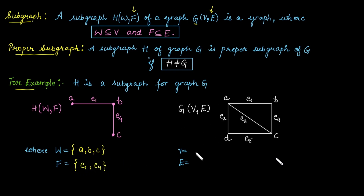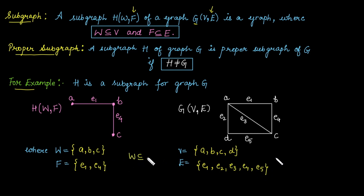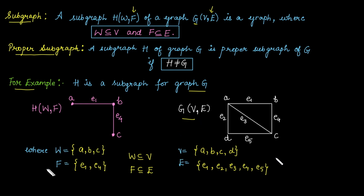G is a graph with vertex set {A, B, C, D} and edge set {E1, E2, E3, E4, E5}. We can check that W is a subset of vertex set V, and edge set F is a subset of edge set E. So H is a subgraph of G. Moreover, it is a proper subgraph because H is not equal to G — the vertex set W is not equal to V and edge set F is not equal to E.